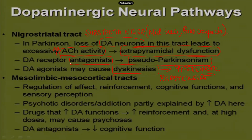If you give dopamine agonists, they will cause plentiful dopamine to be released at the level of the dopaminergic neurons, resulting in dyskinesias — hyperkinetic movements. This also explains why we use dopamine agonists to treat Parkinson's and why dopamine blockers cause pseudoparkinsonism or drug-induced Parkinsonism. The latter is actually a side effect of dopamine receptor antagonists.